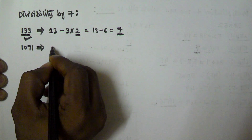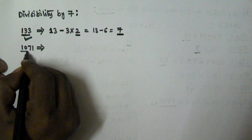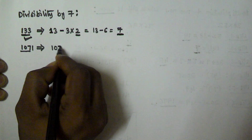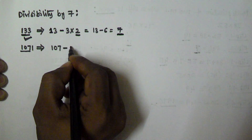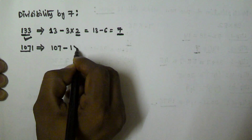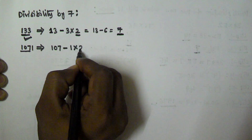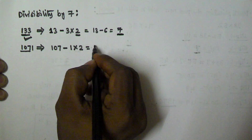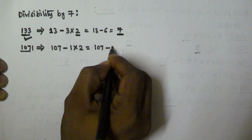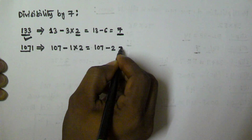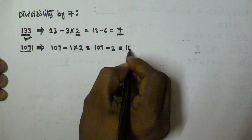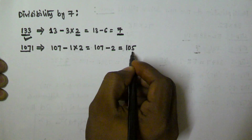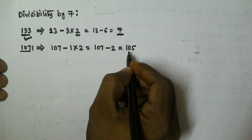Let's consider another example: 1071. We take all the digits except the unit digit, which gives us 107. Then we subtract the unit digit 1 multiplied by 2, giving us 107 minus 2, which equals 105.